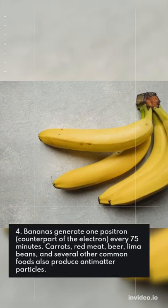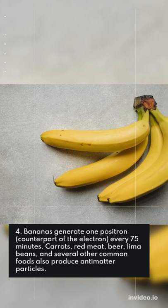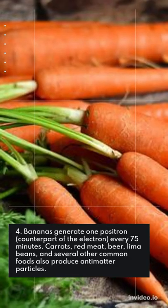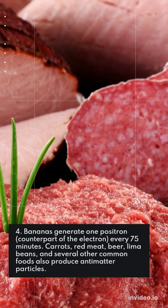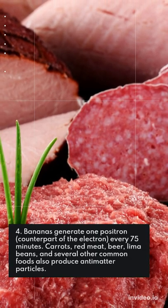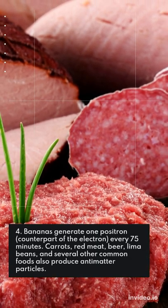Number 4. Bananas generate 1 positron, counterpart of the electron, every 75 minutes. Carrots, red meat, beer, lima beans, and several other common foods also produce antimatter particles.